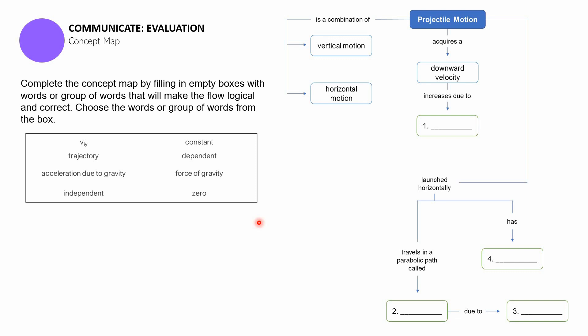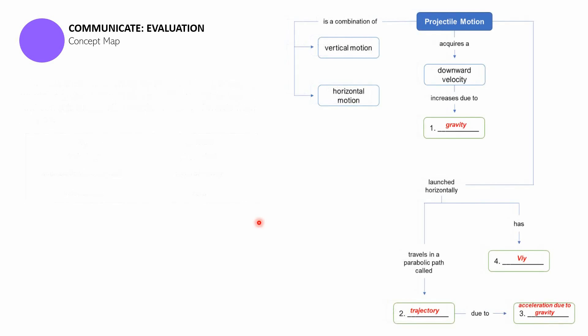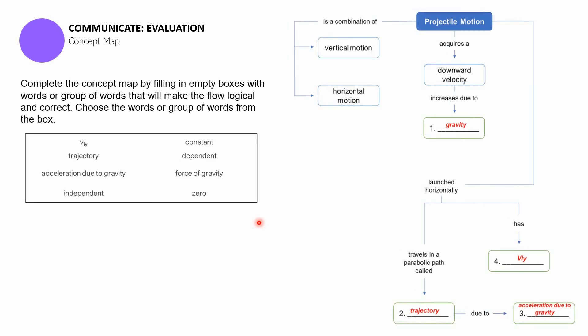Are you done? Okay, let's now proceed with the checking. So the following are the answers to the concept map. Number one, the answer is gravity. Number two, the answer is trajectory. Number three is acceleration due to gravity. And then last one, number four, the answer is V-I-Y. So that is it for this part of the session, Communicate Evaluation Concept Map.